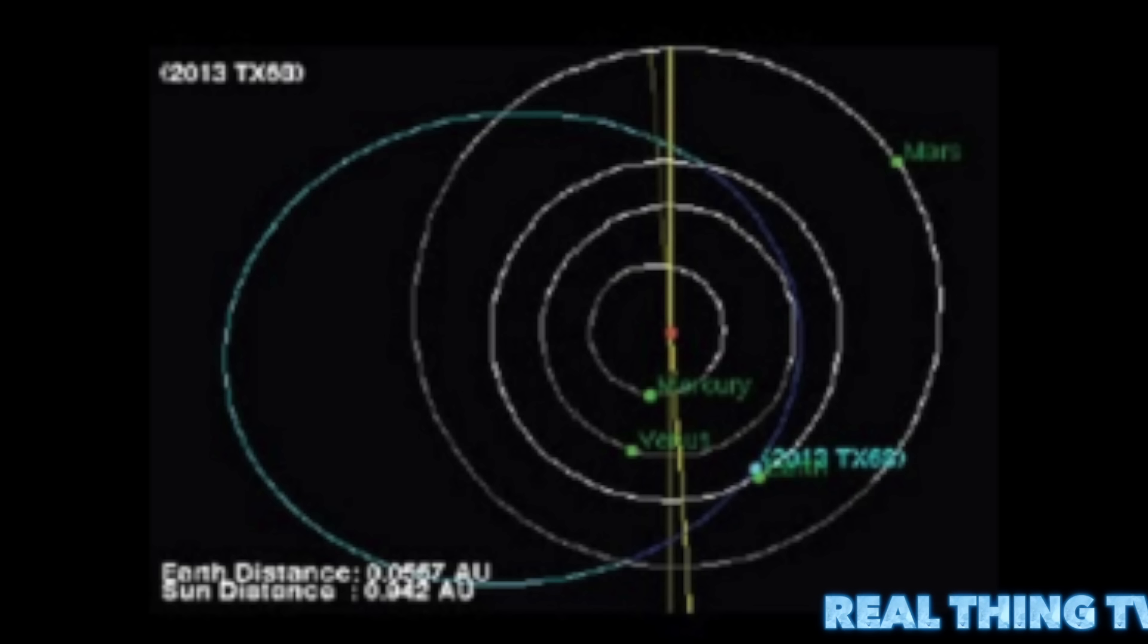Asteroid 2013 TX68 is estimated to be about 100 feet, 30 meters, in diameter. By comparison, the asteroid that broke up in the atmosphere over Chelyabinsk, Russia three years ago was approximately 65 feet, 20 meters, wide.